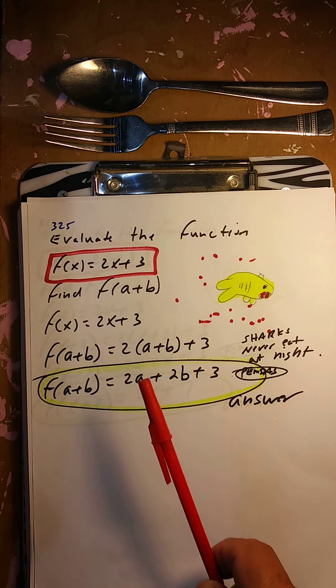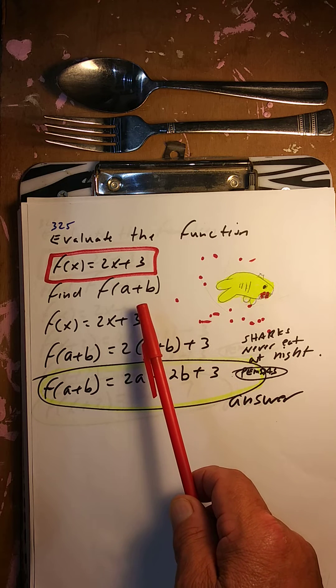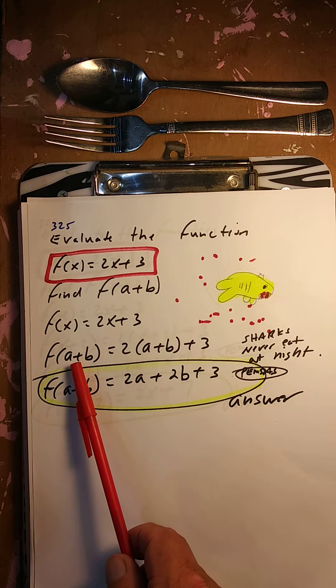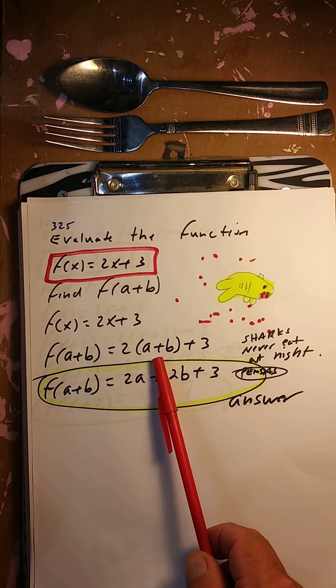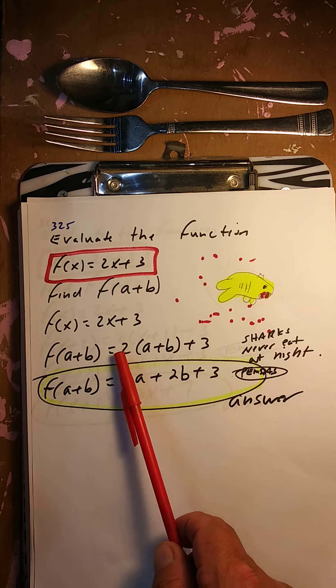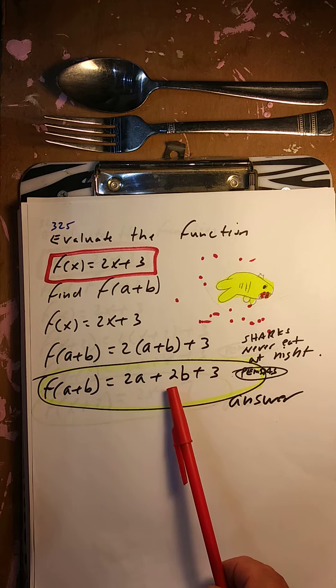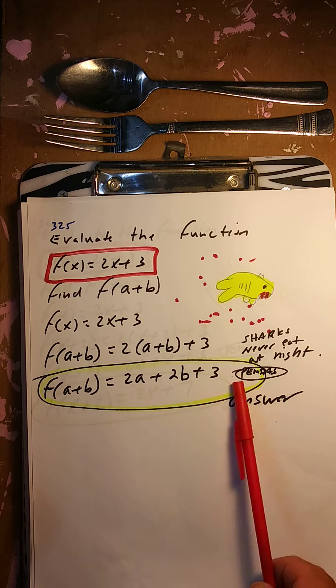Evaluate the function f of x equals 2x plus 3, find f of a plus b. Put in a plus b for the x. So 2 times a is 2a, 2 times b is 2b, plus 3. That's it — no more like terms.